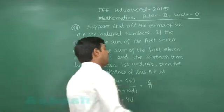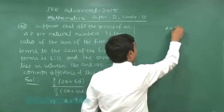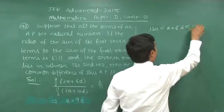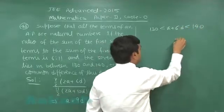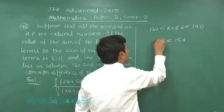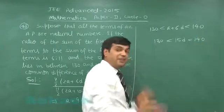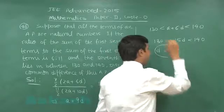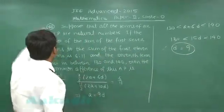Also given to me, 7th term lies between 130 and 140 means A plus 6D is between 130 to 140. Substitute the value of A as 9D, we have 15D is between 130 to 140. D is a natural number, so we simply get the value of D as 9.